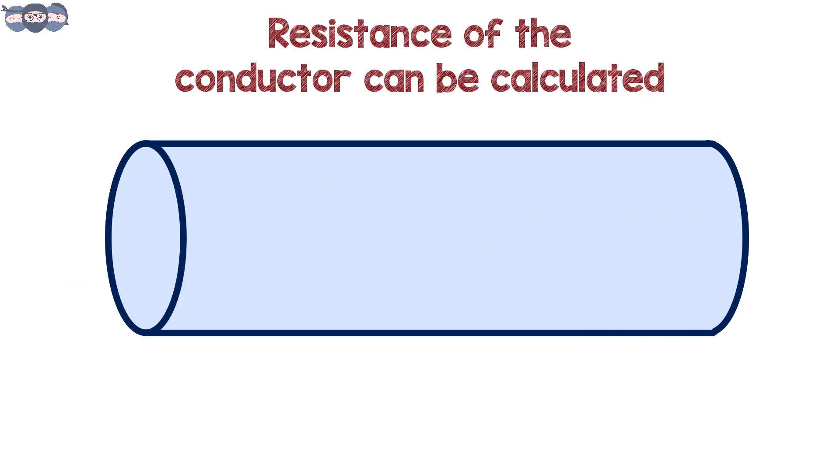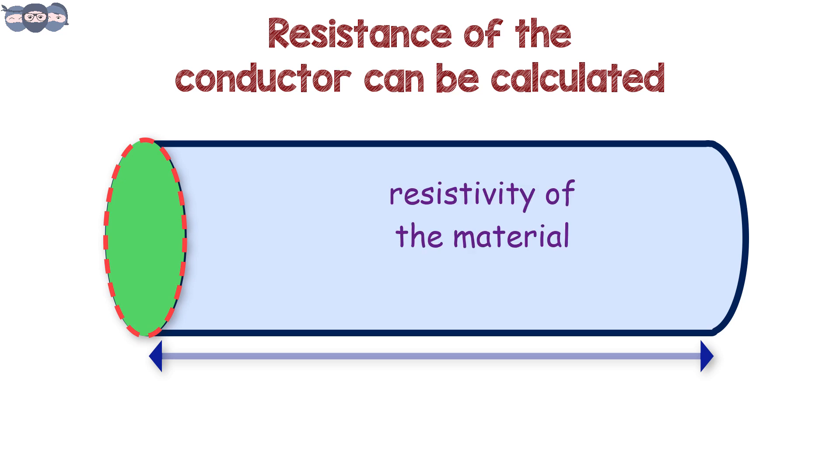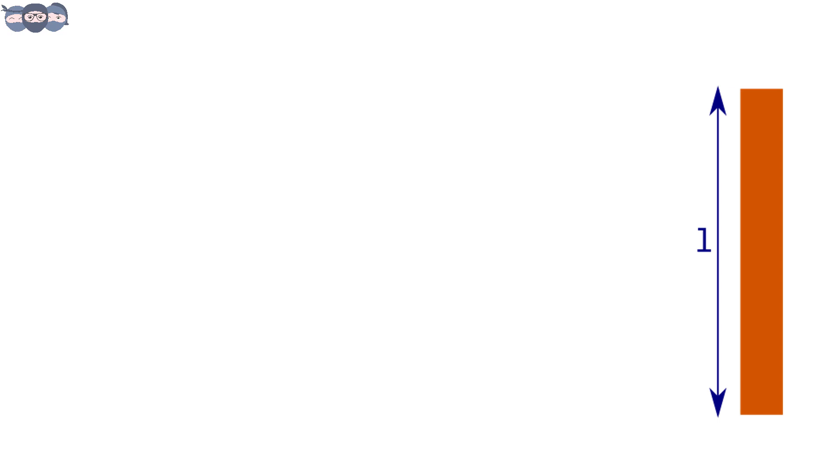Resistance of a conductor can be calculated if the length of the conductor, its area of cross section, and the resistivity of the conductor's material is known. Suppose the length is L, cross section area is A, and the resistivity is rho.